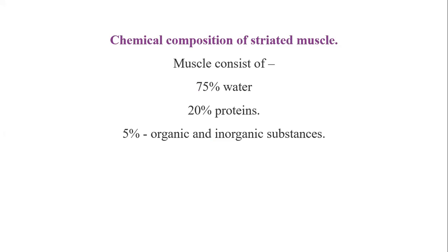In that 5%, inorganic materials like glycogen and its derivatives are present, and organic substances like free amino acids and phosphagens. Phosphagens play an important role in muscle contraction, which we will discuss under chemical changes during muscle contraction. The key composition to remember is: 75% water, 20% proteins, and 5% organic and inorganic substances.